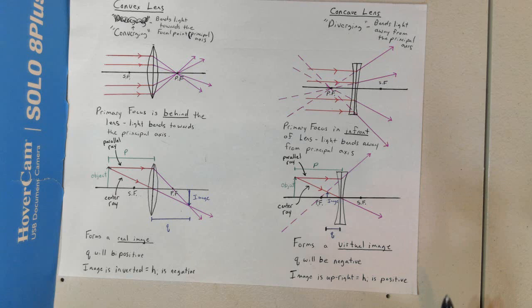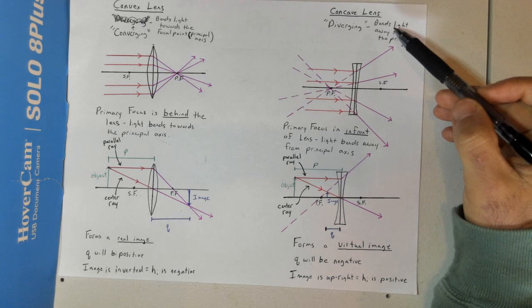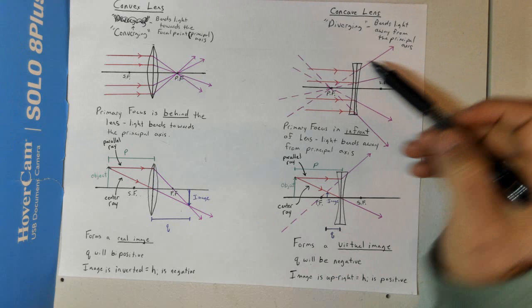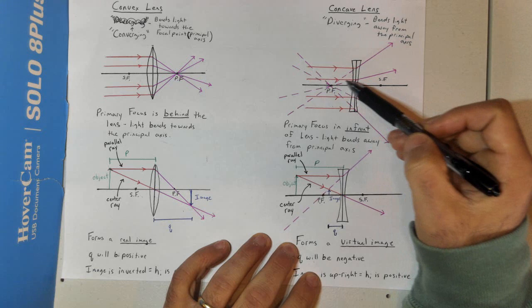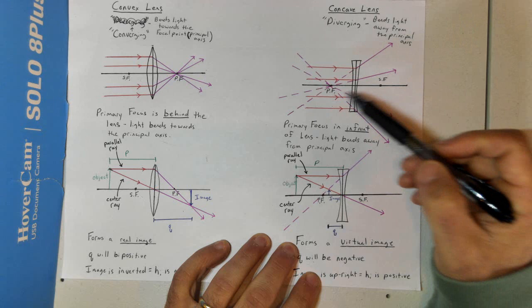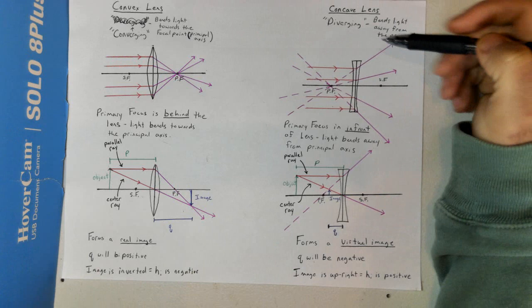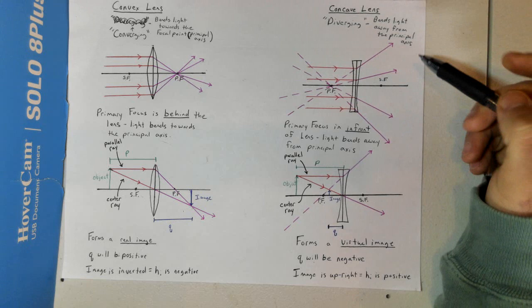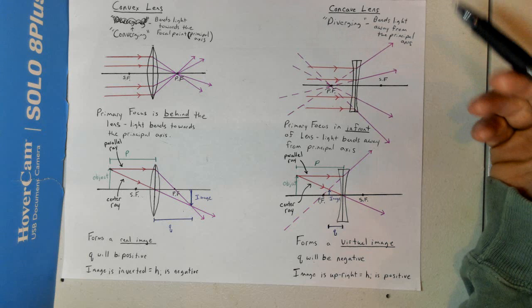Now we're going to move on to concave lenses. Concave means diverging — light is moving away, bending away from the principal axis. As light comes in, it hits the line of action and goes outward. Because we have diverging rays, we know they will not intersect, so we're not going to form an image directly.